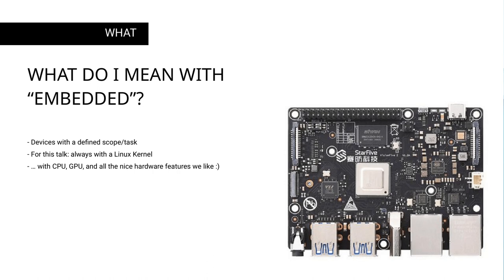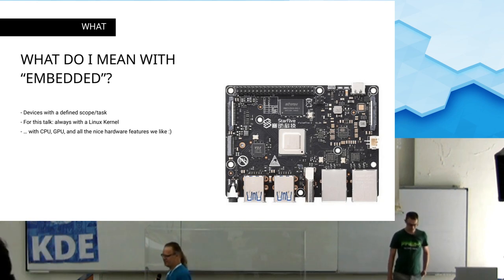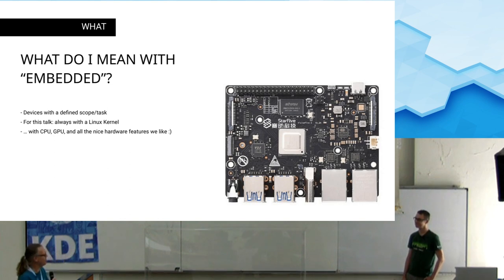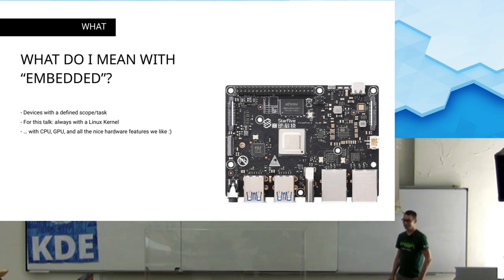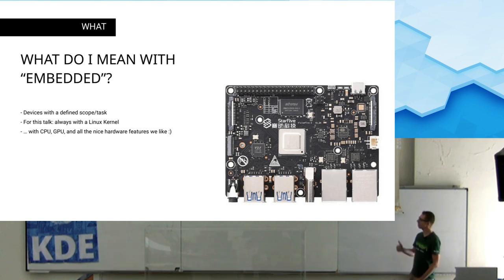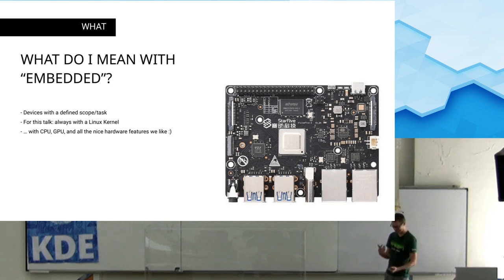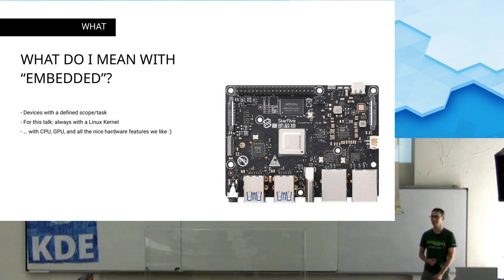There is an extremely wide range of different things. There are people for whom embedded is a really small microprocessor with a few kilobytes of RAM — that does not make sense for us if we want to run a Plasma desktop on it. In the scope of this talk, I am talking about development boards: things that are powerful in terms of CPU, usually have a GPU also, because doing Qt Quick rendering with CPU-only acceleration is not much fun, especially if the CPU is not that fast.